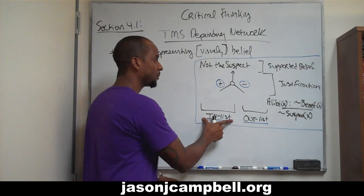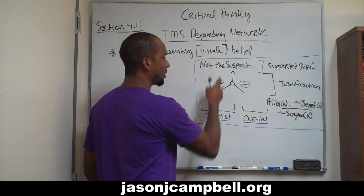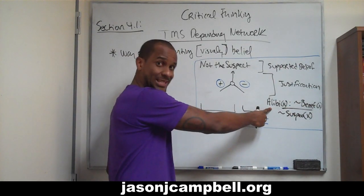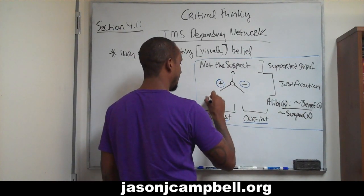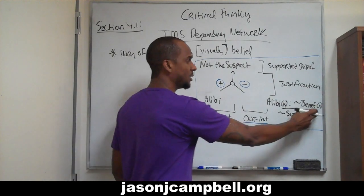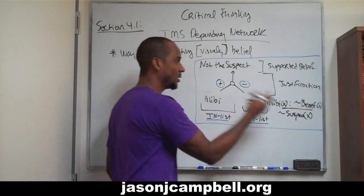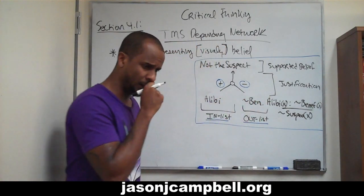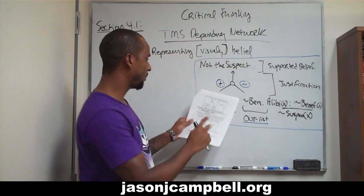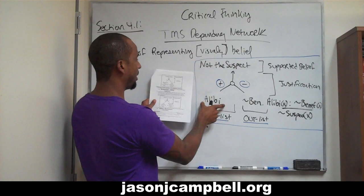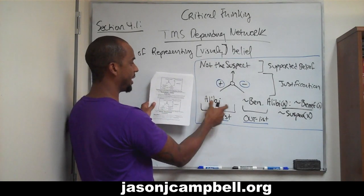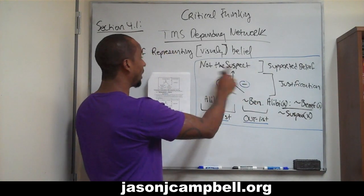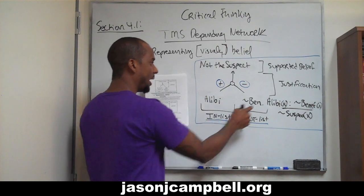What goes in our in-list? As we saw before, what supports the fact that Abbott specifically is not the suspect? Well, there is an alibi — alibi goes in the in-list. What goes in our out-list? He is not the beneficiary. So we can see it's different from the first one: in the first case, we had beneficiary in our in-list and alibi in our out-list. When we think he is not the suspect, we have alibi in our in-list and beneficiary in our out-list.